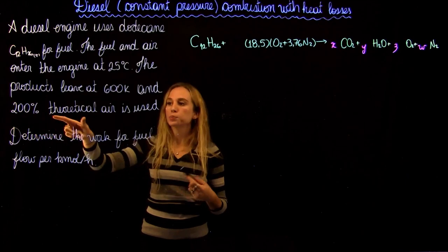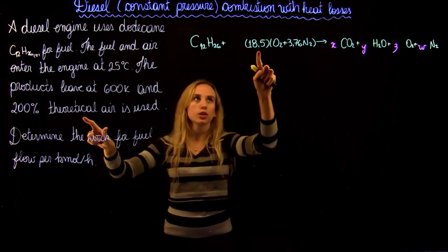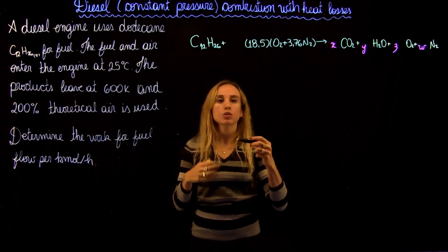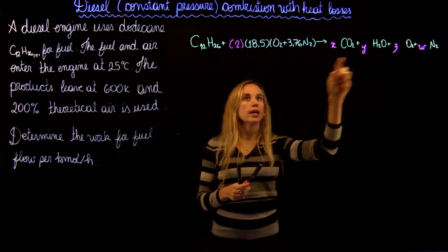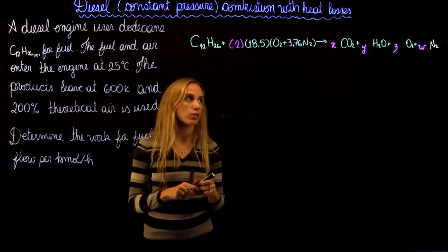And in this case, we are told that we use 200% of theoretical air. So this is theoretical air and we're using 200%, so that's going to be 2. Now we're going to have 4 equations so we can actually solve for all our values.